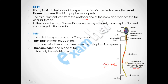The axial filament starts from the posterior end of the neck and reaches the tail. The body's axial filament is surrounded closely by a wound spiral filament consisting of mitochondria. This mitochondria-rich region in the body of the sperm provides energy for sperm motility.